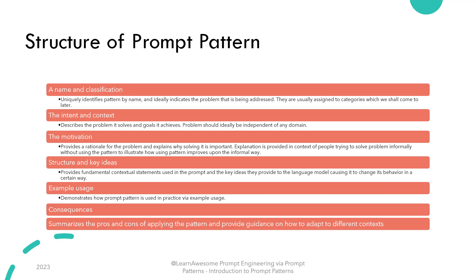Then comes structure and key ideas, which provide fundamental contextual statements used in the prompt and the key ideas they provide to the language model, causing it to change its behavior in a certain way. This is followed by example usage, which demonstrates how a prompt pattern is used in practice with examples. And lastly, the consequences, which summarize the pros and cons of applying the pattern and provide guidance on how to adopt it in different contexts.